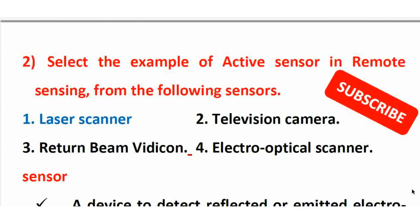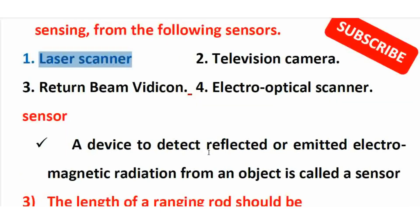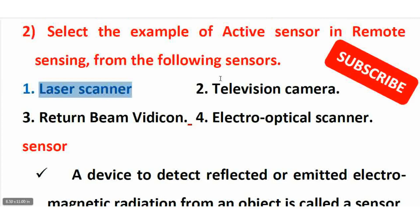Next question: Select the example of an active sensor in remote sensing. A laser scanner is the active sensor — that is the right answer. A sensor is a device that detects reflected or emitted electromagnetic radiation from an object. It is attached to the platform. The laser scanner is an active sensor, while cameras, television cameras, and similar devices are passive sensors.